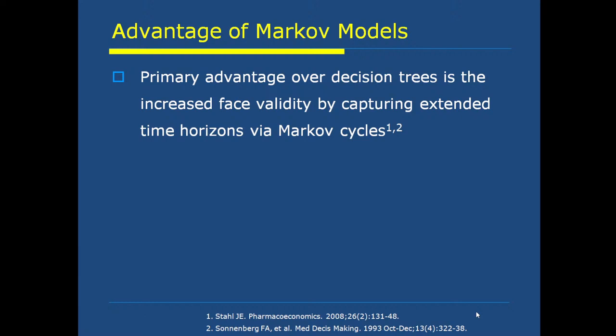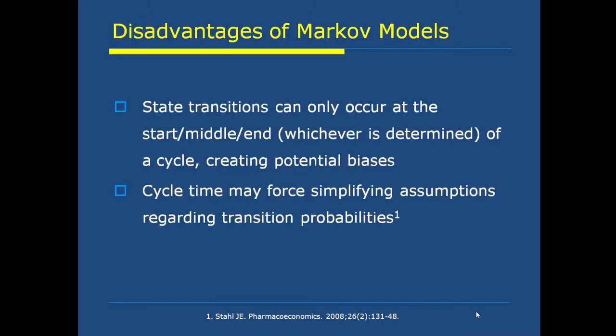The primary advantage of Markov models over decision trees is the increased face validity by capturing expected time horizons via Markov cycles. Disadvantages of Markov models: state transitions can only occur at the start, middle, or end of a cycle, creating potential biases. Cycle time may force simplifying assumptions regarding transition probabilities. Uncertainty around branching probabilities and terminal node values is examined with sensitivity analysis.